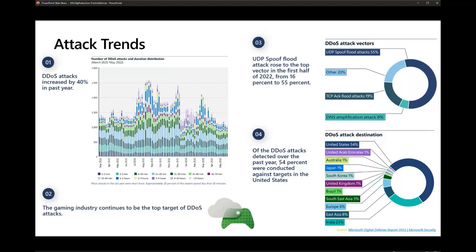Of the DDoS attacks detected over the past year, 54% were conducted against targets in the United States — a trend partially explained by the fact that most Azure and Microsoft customers are in the US. We've seen a sharp uptick in attacks against India, from just 2% of all attacks in the second half of 2021 to 23% in the first half of 2022. East Asia — Hong Kong in particular — remains a popular target at 8%, and for Europe we've seen attacks against Amsterdam, Vienna, Paris, and Frankfurt regions. This geographic footprint will continue to expand as increasing smartphone penetration drives the popularity of mobile gaming.